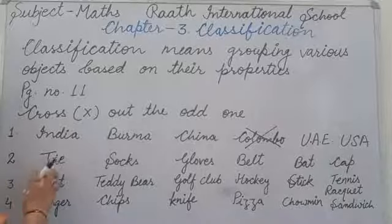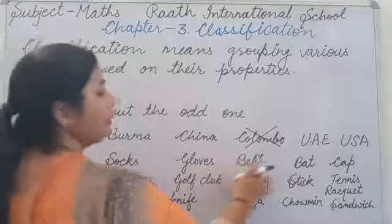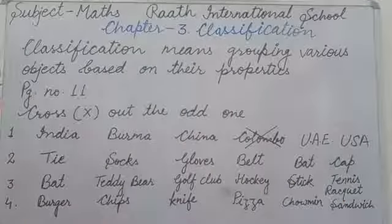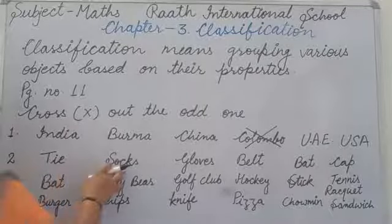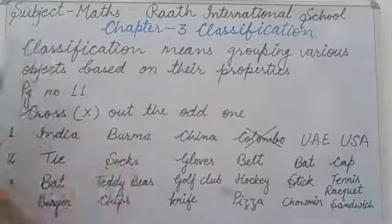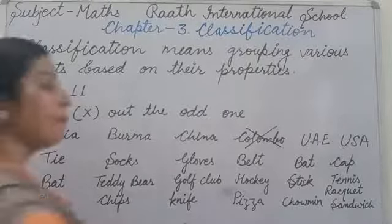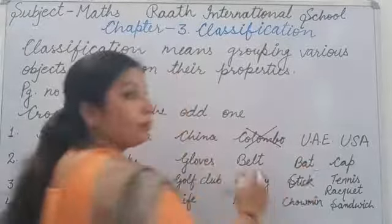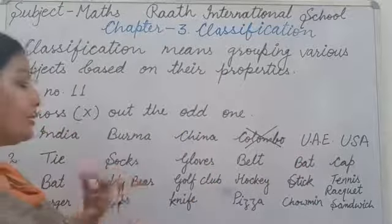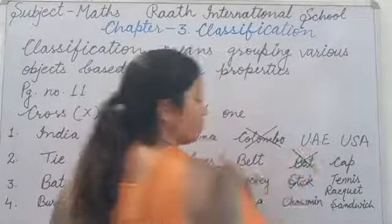Now let's see the second question: tie, socks, gloves, belt, bag, cap. So which one is different? You can see that tie, socks, gloves, bag, and cap — these are all things we wear. In sab ko hum pehante hai. But bat — what do we use a bat for? For playing. So that means bat is different from all these, which are for wearing. Bat is for playing, so this is different. We cross it.